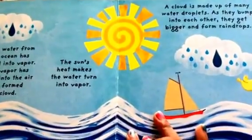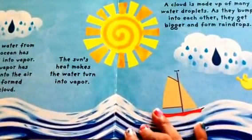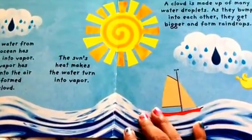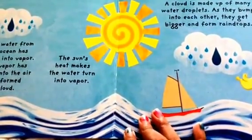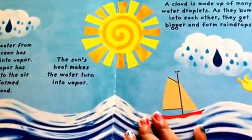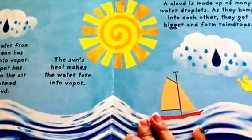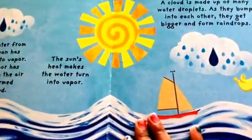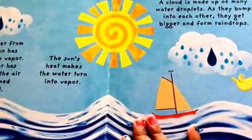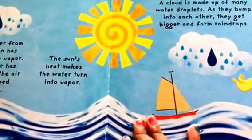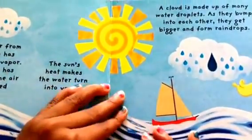A cloud is made up of many water droplets. As they bump into each other, they get bigger and form raindrops.